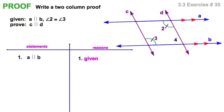In this proof, I'm starting with a pair of parallel lines, the blue ones, and a pair of congruent angles, two and three. And I'm going to prove that the purple lines are parallel. All right, let's get to it.